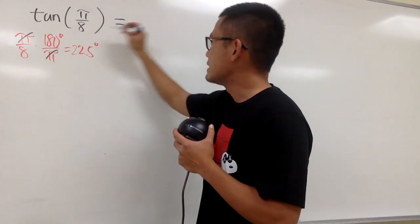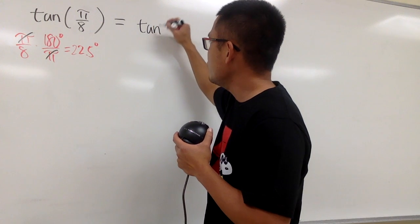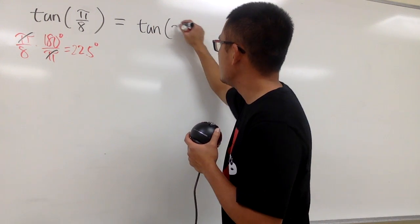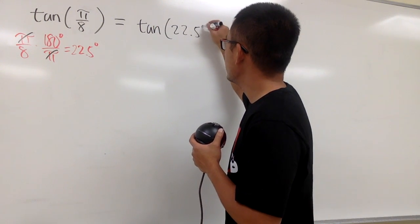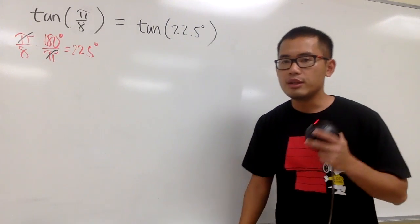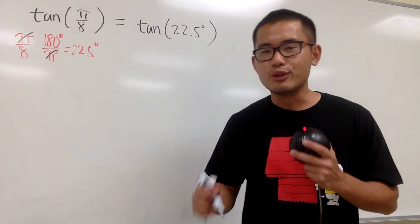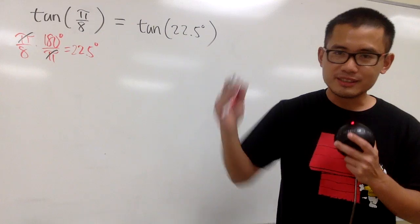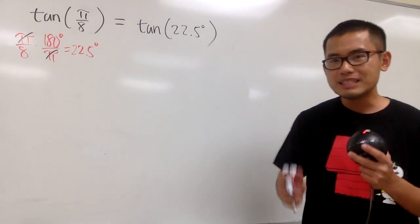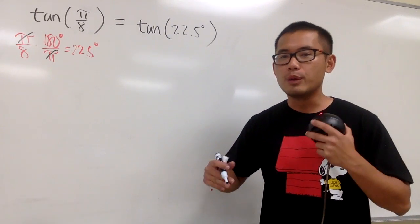Therefore, this question is the same as asking: what is the exact value for tangent of 22.5 degrees? Keep in mind, whenever the question asks us to find the exact value for tangent, sine, cosine, or whatsoever, we must be working with a special angle that we know how to deal with.